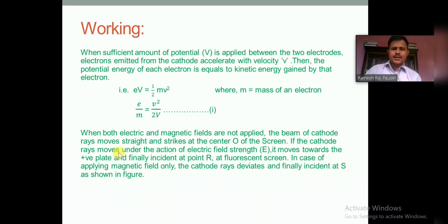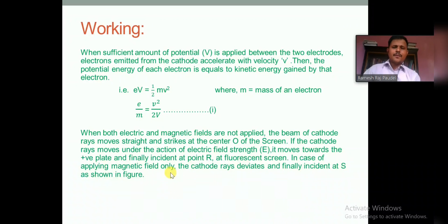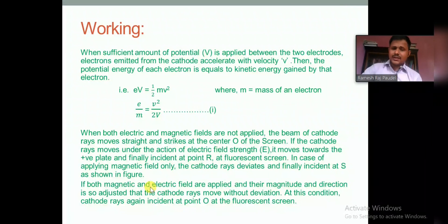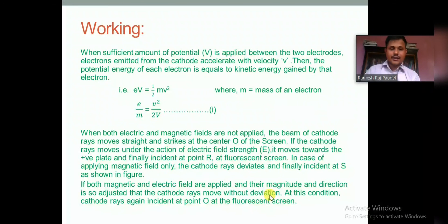When both electric and magnetic fields are not applied, the cathode ray beam moves straight and strikes at center O of the screen. Under electric field only, the cathode rays move towards the positive plate and strike at point R. Under magnetic field only, the cathode rays deviate and strike at point S. When both fields are applied with their magnitudes and directions adjusted, the cathode rays move without deviation — this is the cross field case — and the cathode rays again strike at point O on the fluorescent screen.